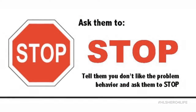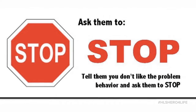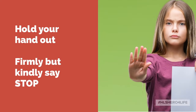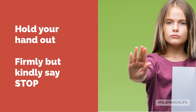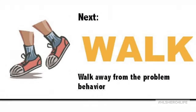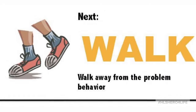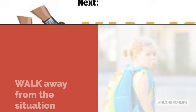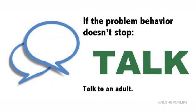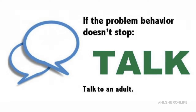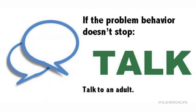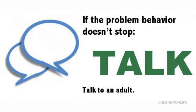When someone hurts your feelings or your body, tell them to stop. Hold your hand out and firmly but kindly say stop. After you have told the person to stop, walk away from the problem situation or behavior. If the problem keeps going, walk to an adult and talk to them about the situation. Don't continue to engage with the other person.